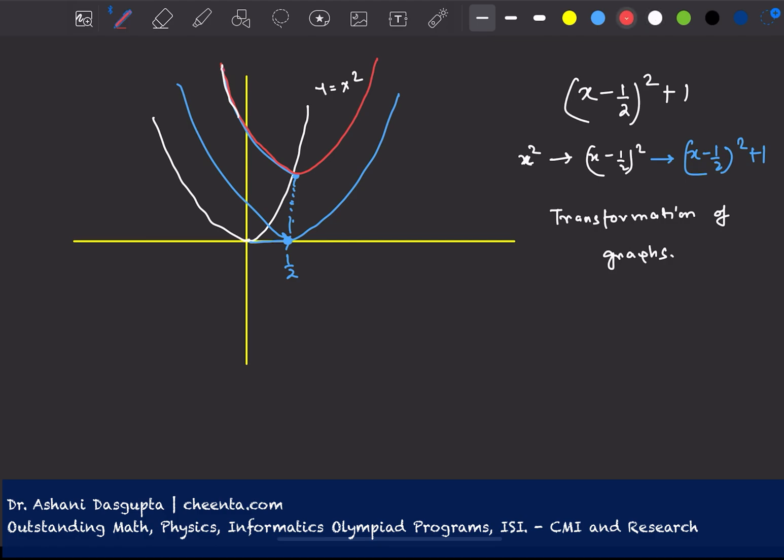So anyway, coming back to this. So this is the final graph. It is x minus half square plus 1. So notice that the lowest value of it is 1. That's here. So at x equals to half, this is 1. x minus half square plus 1 is 1, and for all other values it's greater than 1.